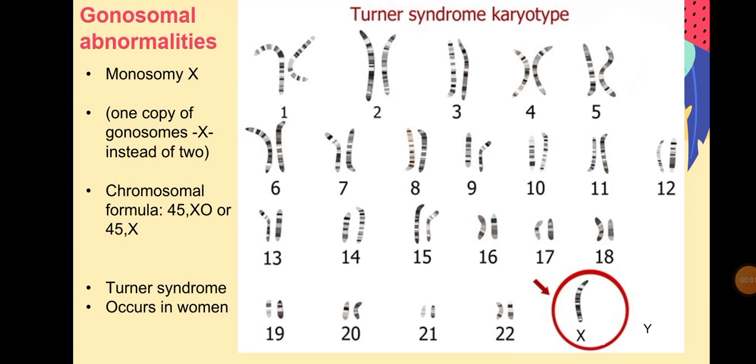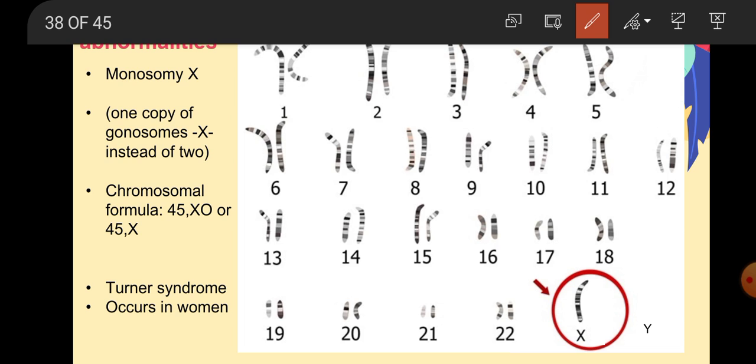Okay students, in this part we will talk about some abnormalities that occur in gonosomes. In the previous part, we talked about problems or abnormalities that happen in autosomes. If we have an extra copy or a missing copy from 1 to 22, we call these abnormalities autosomal because the problems occur in autosomes. But here, in this karyotype, we will talk about gonosomal abnormality. The problem occurs or the abnormal number is found in gonosomes.